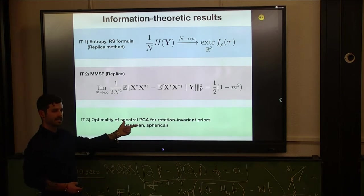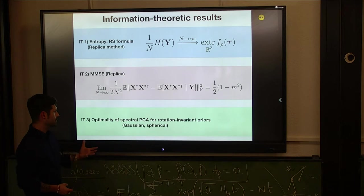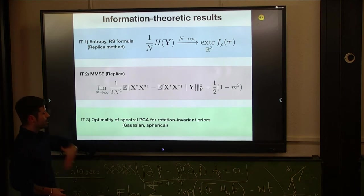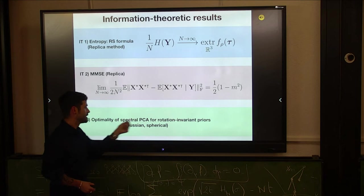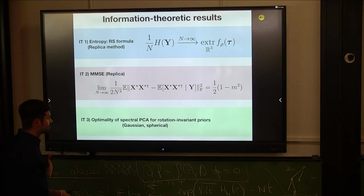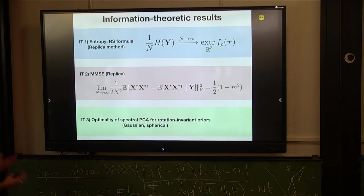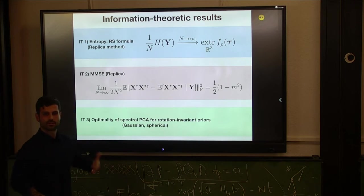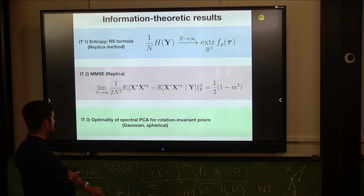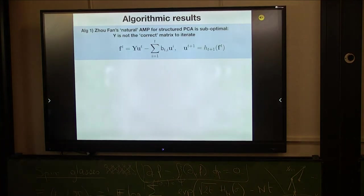One surprise which a posteriori may be not so surprising for knowing a bit this kind of problems is the following fact. We show that spectral PCA, so the spectral algorithm looking just at the first leading eigenvector of the data, is Bayesian optimal in the case where the prior over the signal is rotationally invariant, so Gaussian or spherical. So essentially, this rotational invariance in the prior essentially means that you have nothing to exploit from the prior information, and therefore spectral does as good as the Bayesian estimator. Still, it's non-trivial because the Bayesian estimator is a kind of finite temperature estimator. You are sampling a measure. The spectral algorithm is the solution of an optimization problem. It's the first eigenvector. So this was known in the Gaussian case.